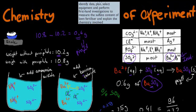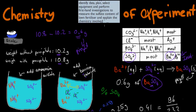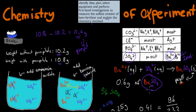To explain the chemistry involved: barium ions and sulfate ions come together to form barium sulfate, which is a solid precipitate weighing 0.6 grams. We can use that information to calculate the rest. I hope that was useful.